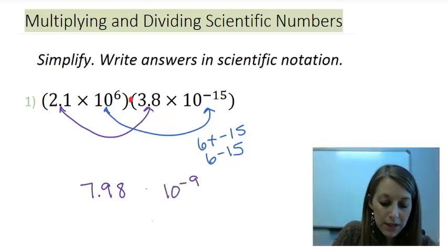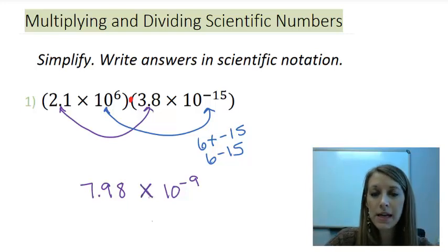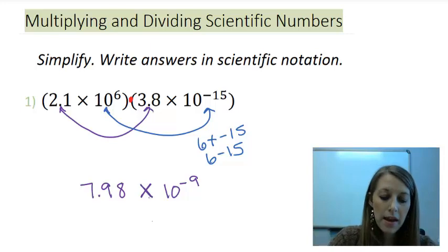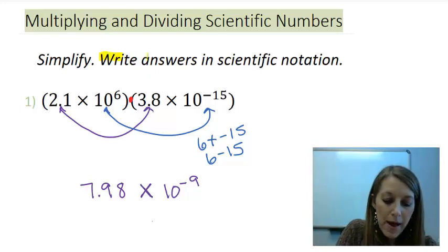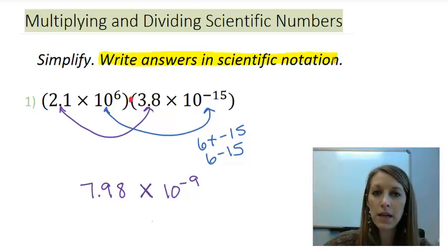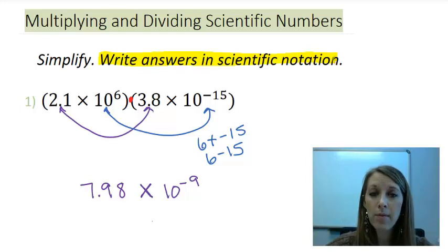So that leaves me with 10 to the negative 9. And the only time we get to use x to resemble times anymore is in scientific notation. Now, I want to go to the instructions here to point out something so you don't miss this in your homework. It specifies that your answers have to absolutely be written in scientific notation.